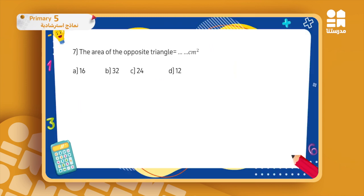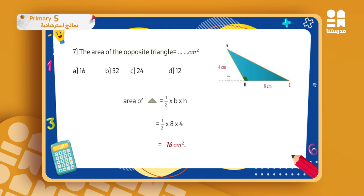Number seven: the area of the given triangle. The rule for finding the area of a triangle is half base times height. So it will be one-half times eight times four, which is 16 centimeters squared. My answer will be letter A, 16 centimeters squared.